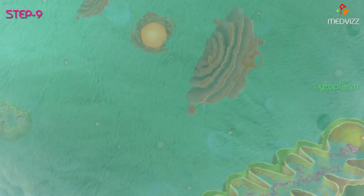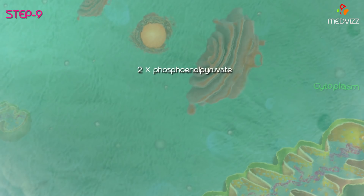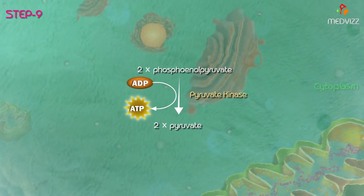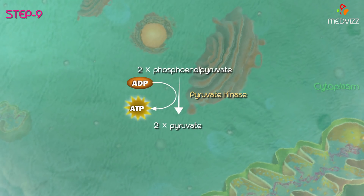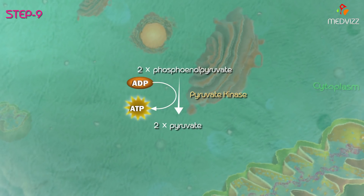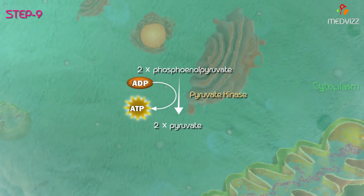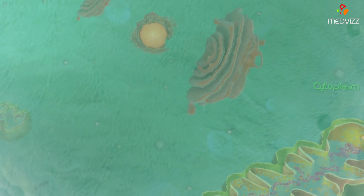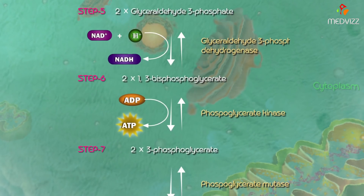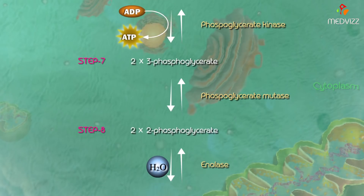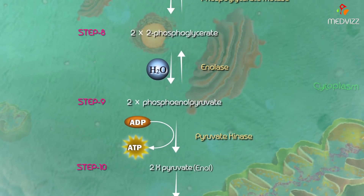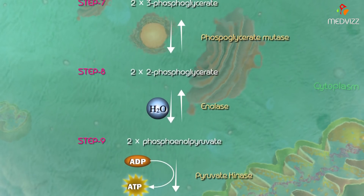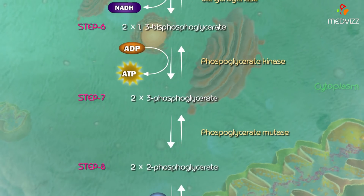In step 8, 2-phosphoglycerate is converted into phosphoenolpyruvate by the enzyme enolase — this is reversible and one molecule of water is removed. In step 9, phosphoenolpyruvate is dephosphorylated to pyruvate by the enzyme pyruvate kinase — another substrate-level phosphorylation step. Pyruvate kinase is a key glycolytic enzyme and this step is irreversible. Steps 5, 6, 7, 8, and 9 together are called the energy generation phase.